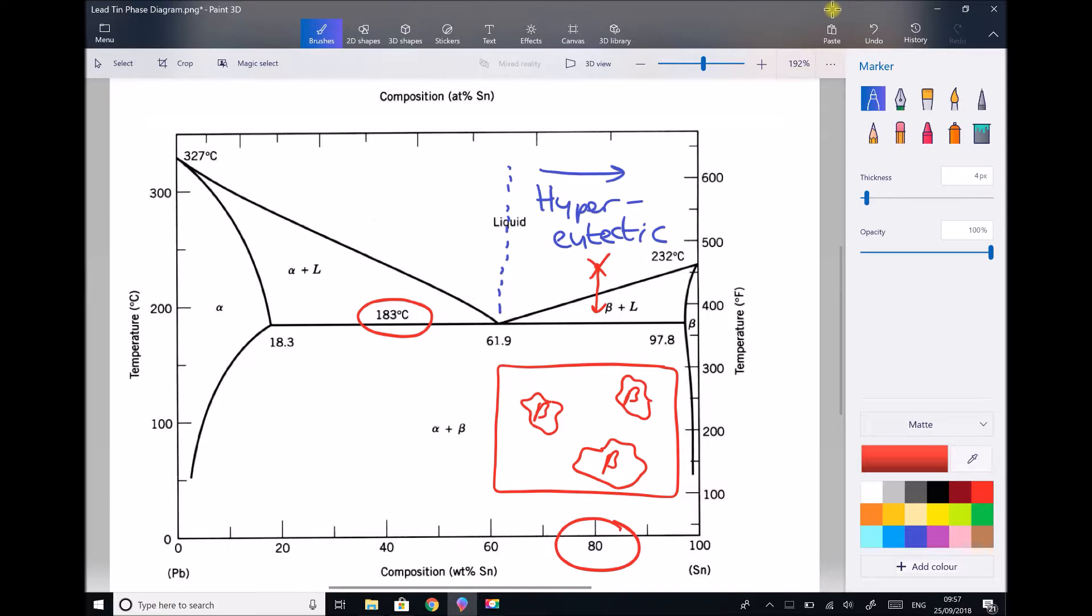So we started with a composition of 80% tin in that liquid, but some of that tin is solidifying out, meaning the composition of tin within the liquid must be decreasing. So we would get to a composition of 70%, we would get to a composition of 65%, until we reached a composition of 61.9% tin.